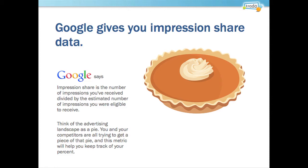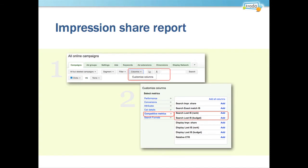When looking at your AdWords account, it can often be very daunting because you can see that maybe some parts are suffering, but you don't know specifically what it is or where you should use your time to more specifically make a difference. To get to Impression Share in your campaigns, you go to Customize and choose from the Competitive Metrics section.